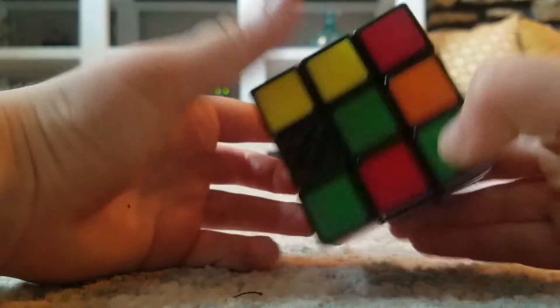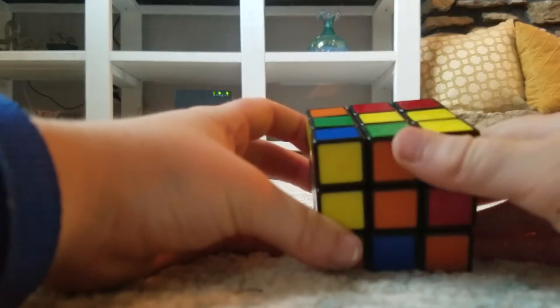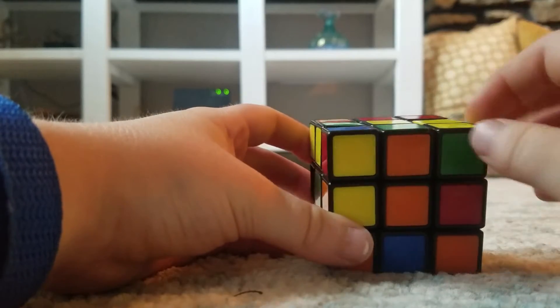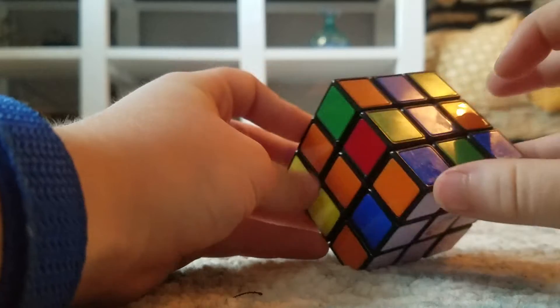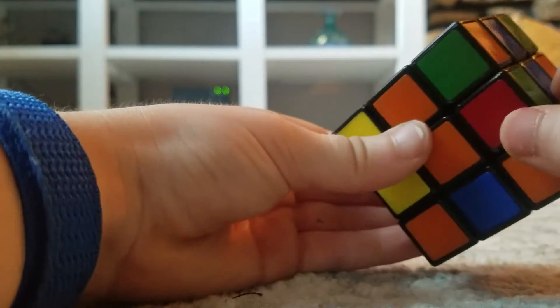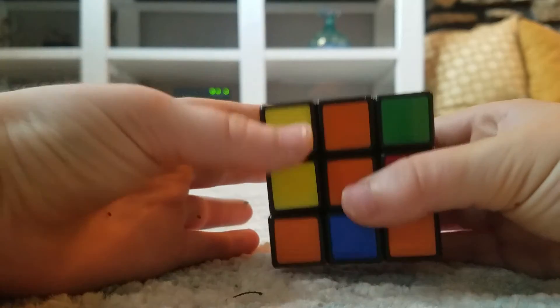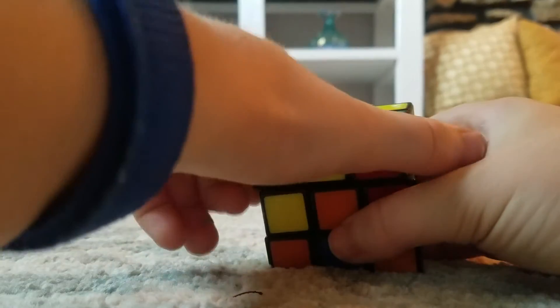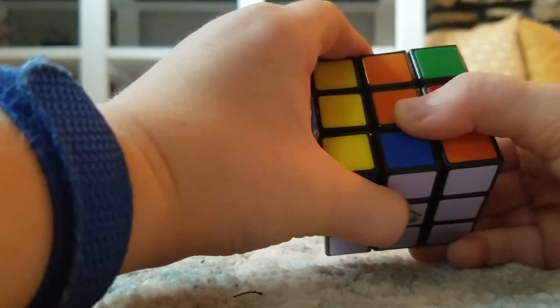But this is still fun to do. So like this, and then see if the top is the same as the left side center or the right side center. So in this case, it's the same as the left side center, so you want it like this. So you want to go over like that and then do the trigger move.